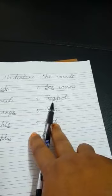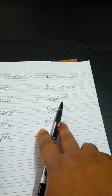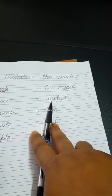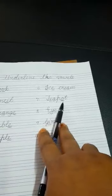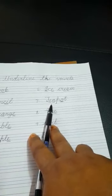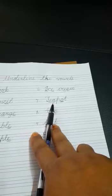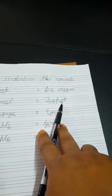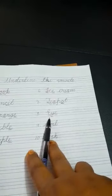Now teapot. Number seven is teapot. So T, E, A, P, O, T. So what are the vowels here? E, A and O.